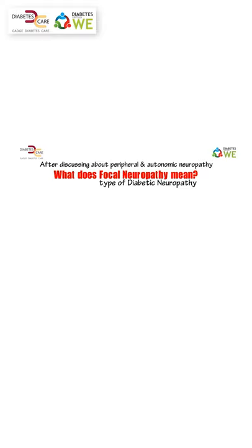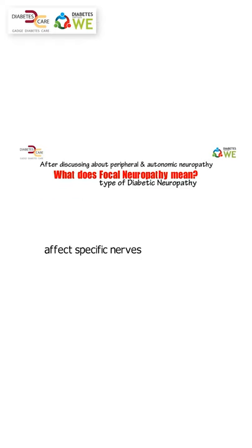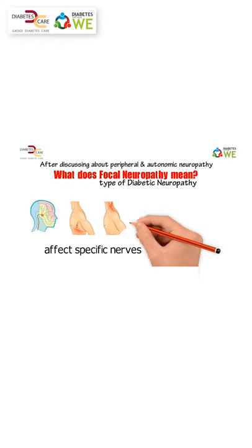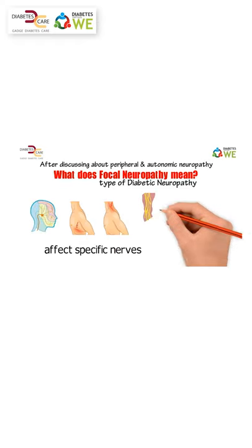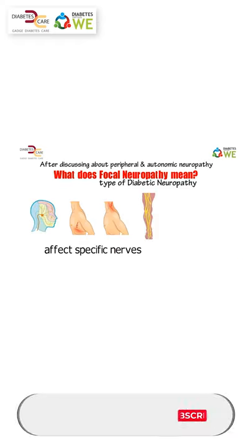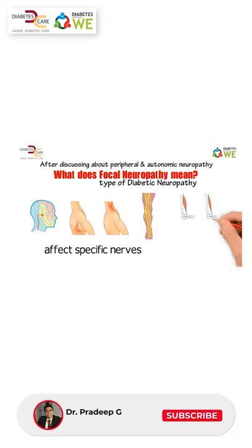Focal neuropathy is a type of diabetic neuropathy that can appear suddenly and affect specific nerves, most often in the head, torso, or leg. It causes muscle weakness or pain.